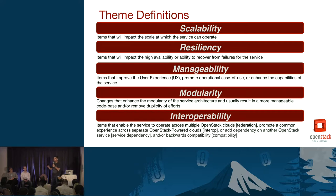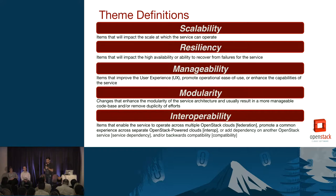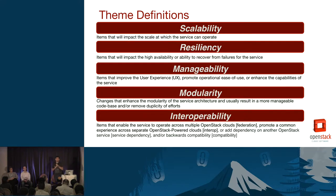The last theme is interoperability. The definition we use is slightly different from "interop," which is used as the federation type of definition across OpenStack clouds. Interoperability in this theme really means federation — having a common experience across multiple OpenStack clouds, having separate clouds with compatible APIs, for example. The other piece is service dependency — a service not duplicating functionality in its own code base but calling another OpenStack service to help it do its job. And then compatibility: if I have service X on an older version, can I be backwards compatible in communications and maintain that experience?